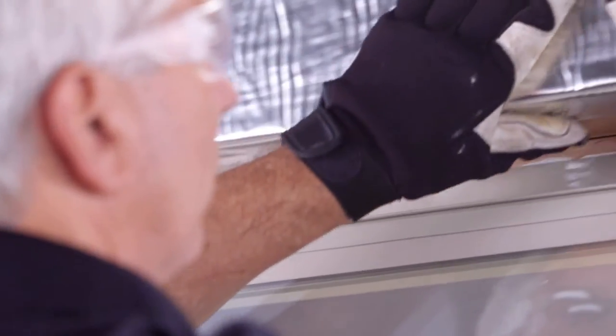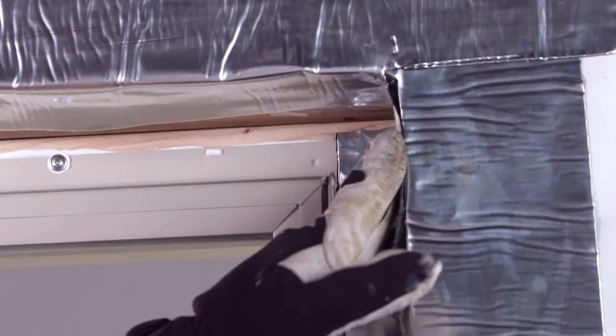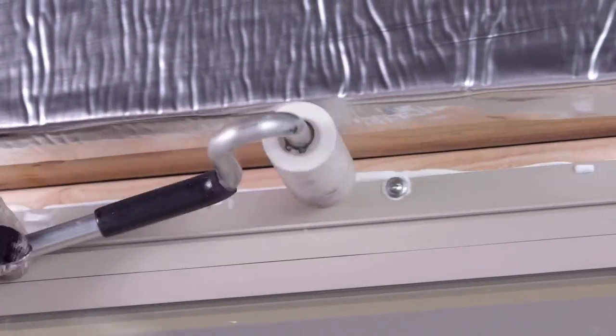Fold the remaining flashing into the opening over the primary head jams. Use the J-Roller to remove any air pockets.